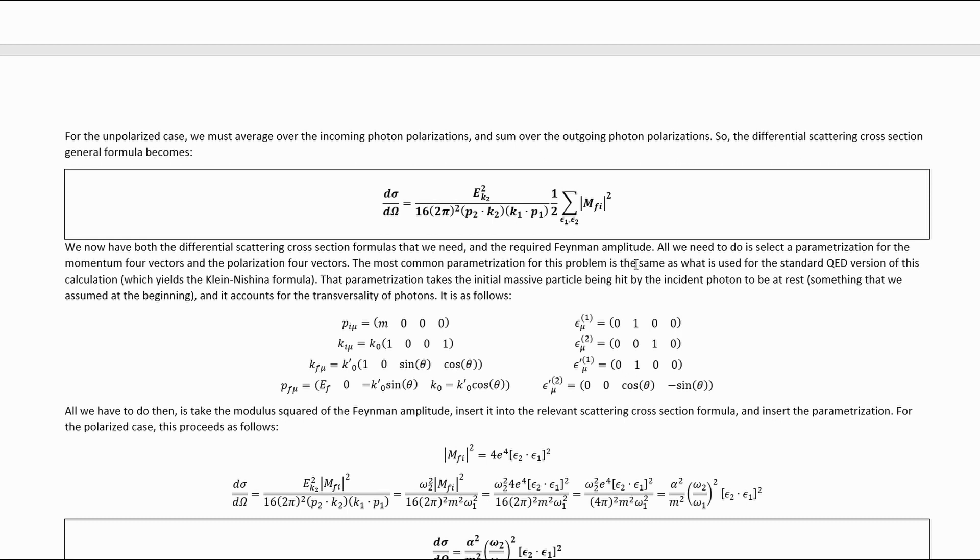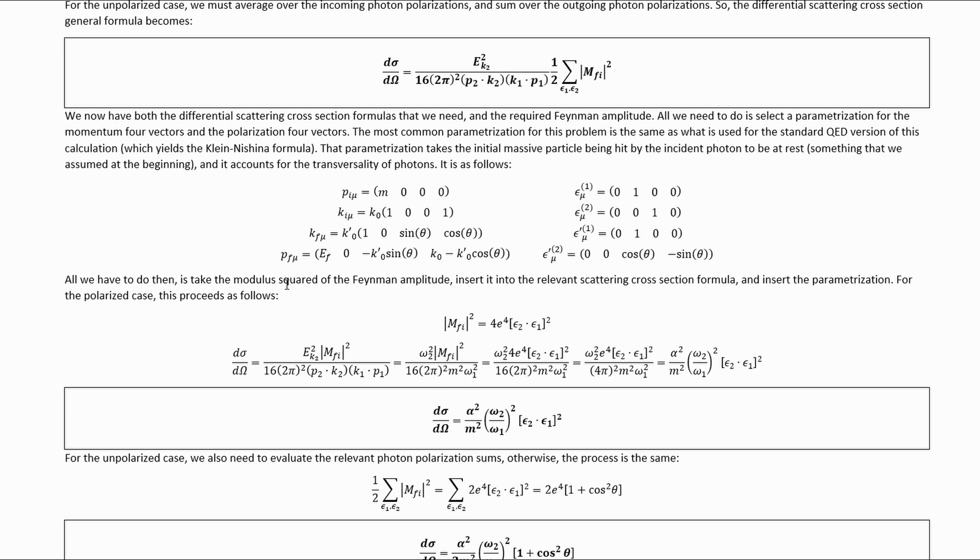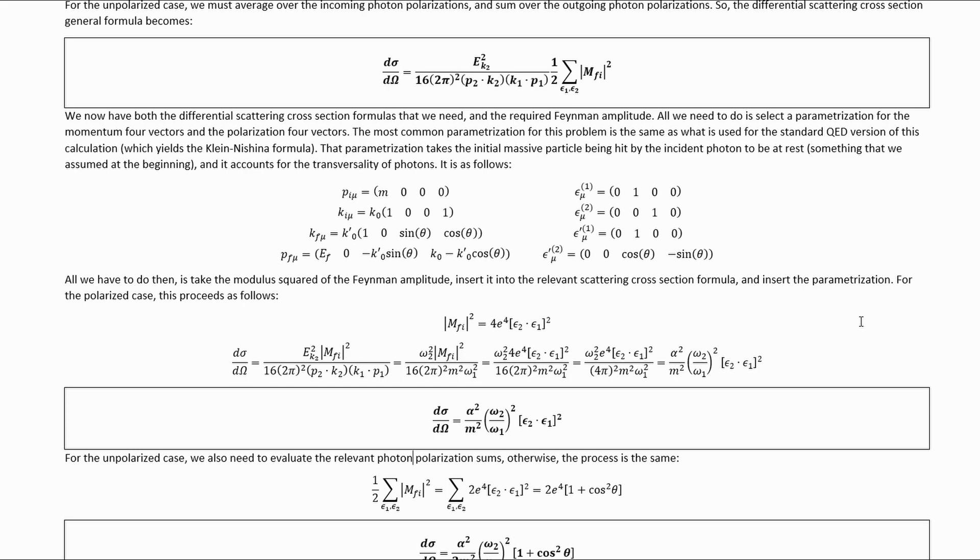All we need to do is select the parameterization for the momentum four vectors and the polarization four vectors. The most common parameterization for this problem is the same as what is used for the standard QED version of this calculation, which yields the Klein-Nishina formula. That parameterization takes the initial massive particle being hit by the incident photon to be at rest and accounts for the transversality of photons. All we have to do then is take the modulus square of the Feynman amplitude, insert it into the relevant scattering cross-section formula, and insert the parameterization.